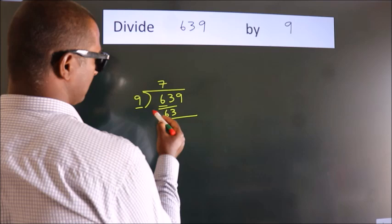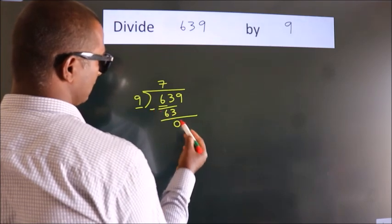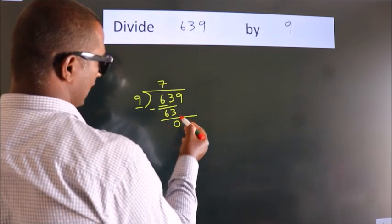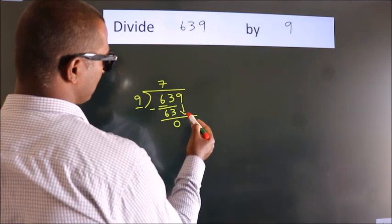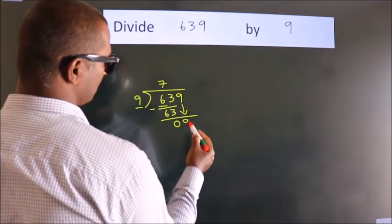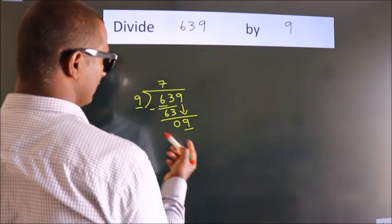Now we should subtract. We get zero. After this, bring down the beside number, so 9 down.